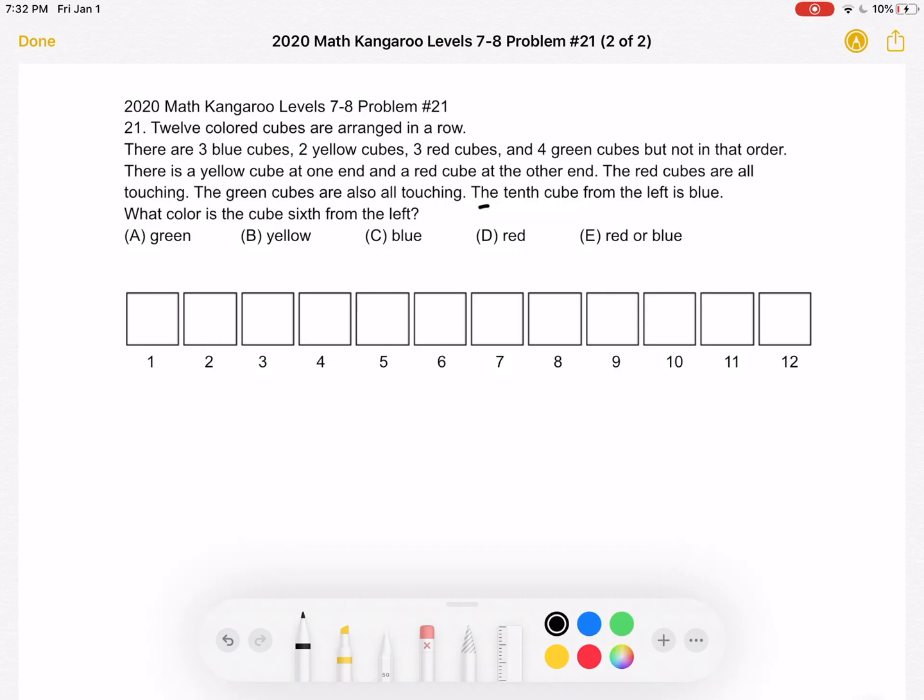So the first thing we can look at is that we know the tenth cube from the left is blue. So this cube over here must be blue.